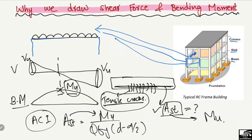The area of steel is directly dependent on the bending moment diagram. The more moment coming on the beam, the more area of steel is provided in order to resist or avoid the tensile stresses. Here, φ is 0.9 for a tension member, fy is the yield tensile strength of the steel bar, d is the effective depth, and a is the compressive block depth. The main reason we draw the bending moment diagram is to find the maximum moment and accordingly provide our steel bars.